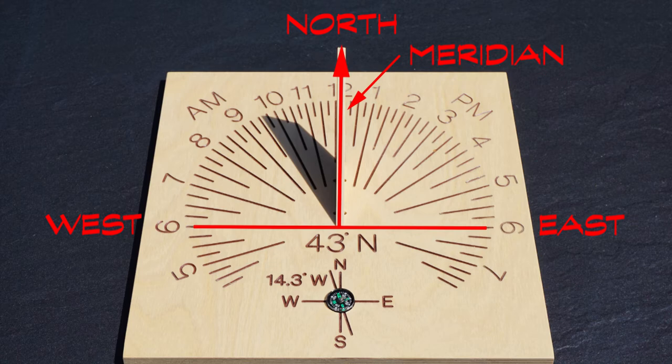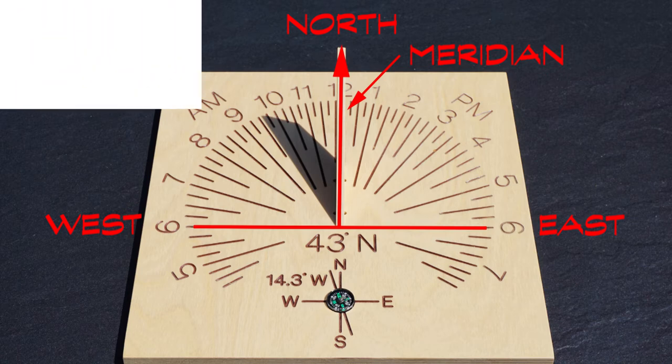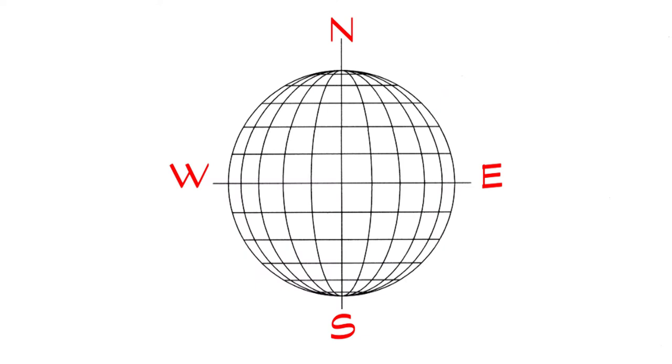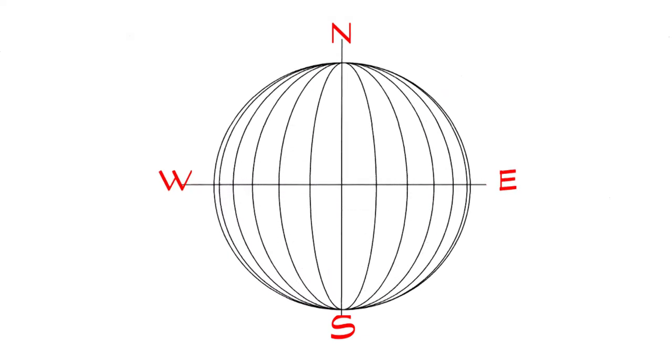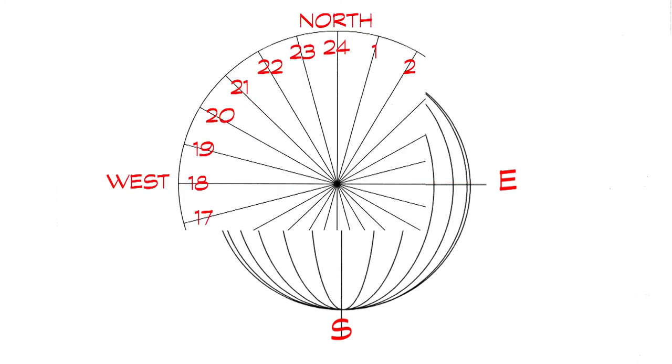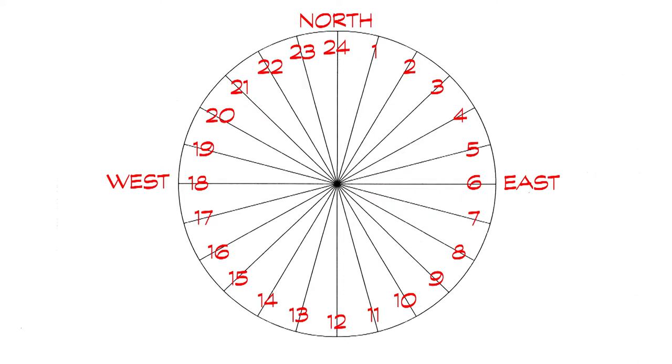The rest of the hour lines are specific to the latitude of the dial's location and radiate from that intersection. To understand these latitude specific lines, let's look at some mapping of the Earth. Longitude is our east-west reference. We can slice through the equator at zero degrees latitude to divide the Earth into 24 equal segments. Each segment represents 15 degrees of longitude. Note that the hours are equally spaced at zero degrees latitude.